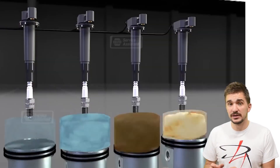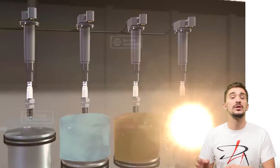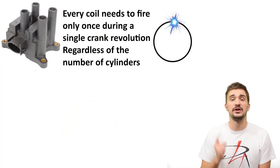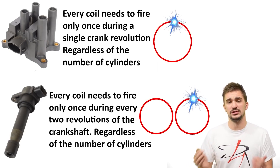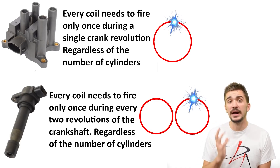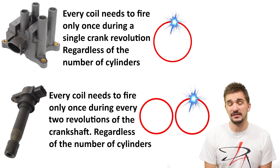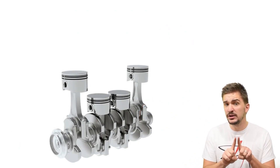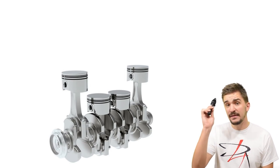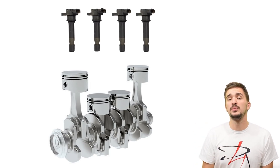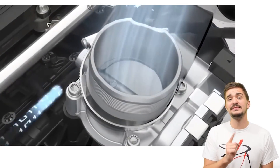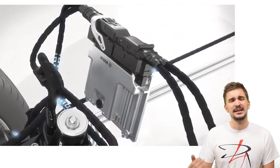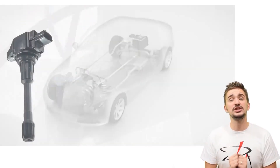Unlike the wasted spark system, in the COP setup each spark plug and each cylinder gets its own ignition coil. In the coil pack, every ignition coil had to fire once per revolution of the crankshaft; in the COP setup, every ignition coil fires only once for every other revolution — meaning even more time to recharge, even more voltage at higher RPMs, and even better operation with the potential for a higher engine redline. Another key benefit is that no two cylinders are paired together: with the COP, every cylinder gets its own ignition coil, giving the ECU the opportunity to individually control ignition timing for every cylinder, leading to a smoother running engine, better idle, better MPG, lower emissions, and even more power.